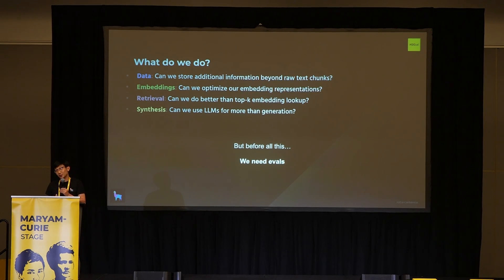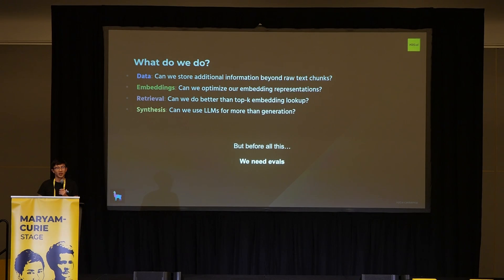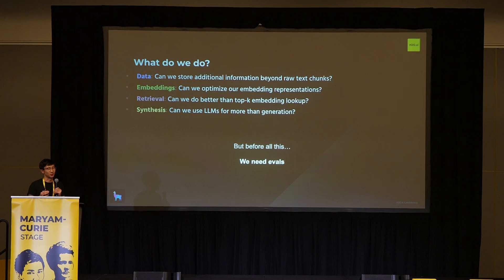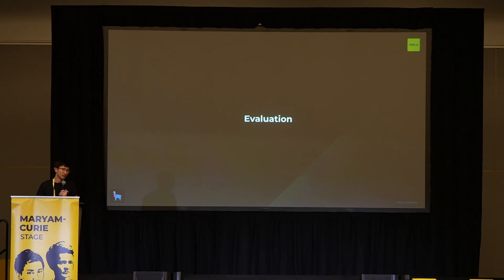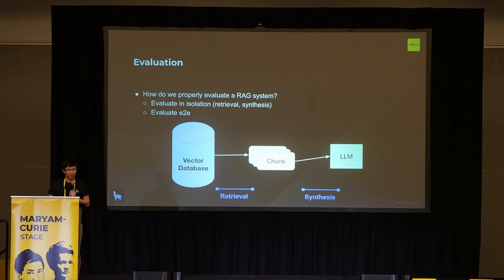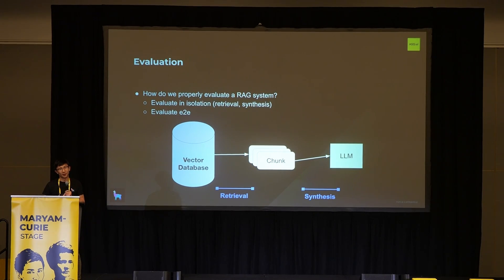Before you actually try anything, you need to define a benchmark. I have a short section on how to think about evals, and we have a lot of resources in the docs about how to do end-to-end evals and retrieval evals. The main thing is: if you're throwing spaghetti at the wall and trying out a bunch of different things, you at least want some reliable quantitative benchmark to validate that whatever you're trying actually works and makes it better. Evals are probably top of mind for a lot of people — we've talked to a lot of enterprises, and one of their key asks is: this thing isn't working, how do I measure it? And then how do I improve it?